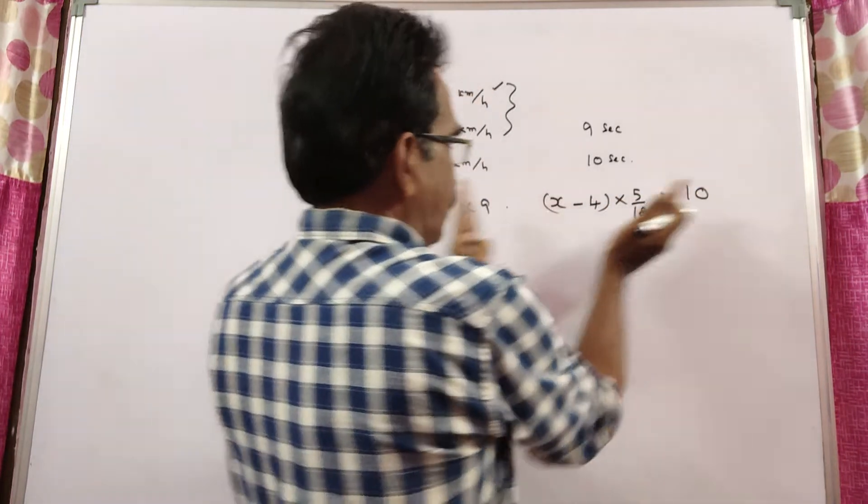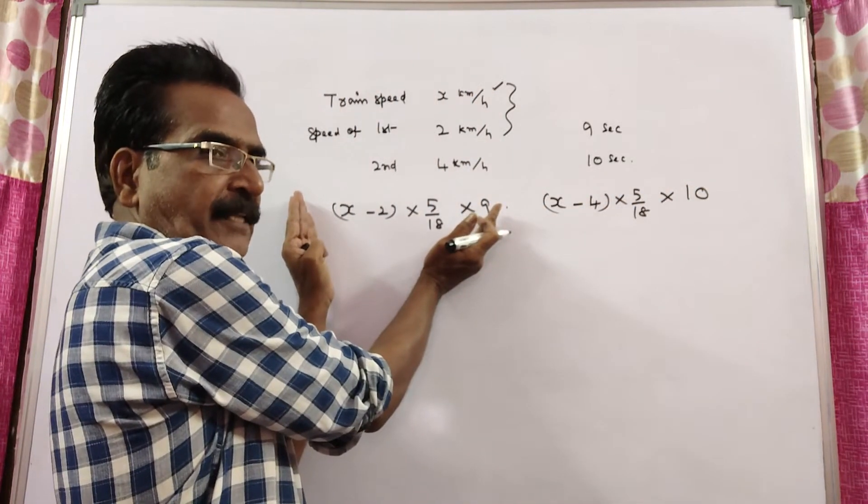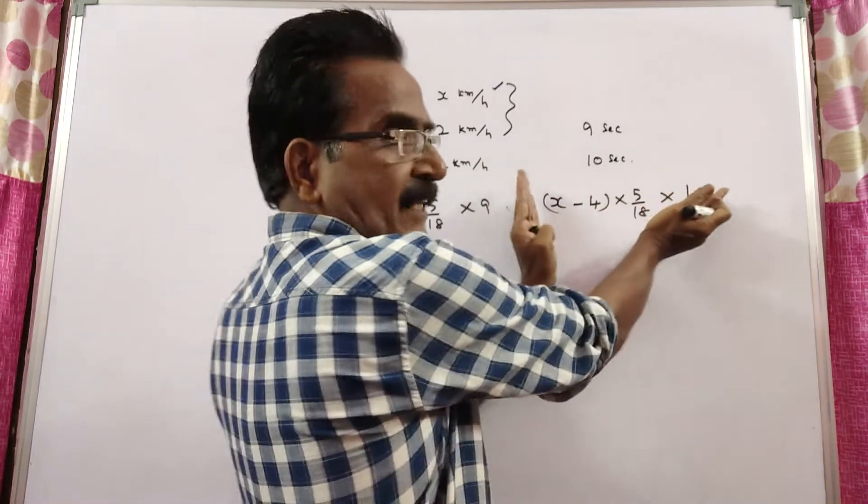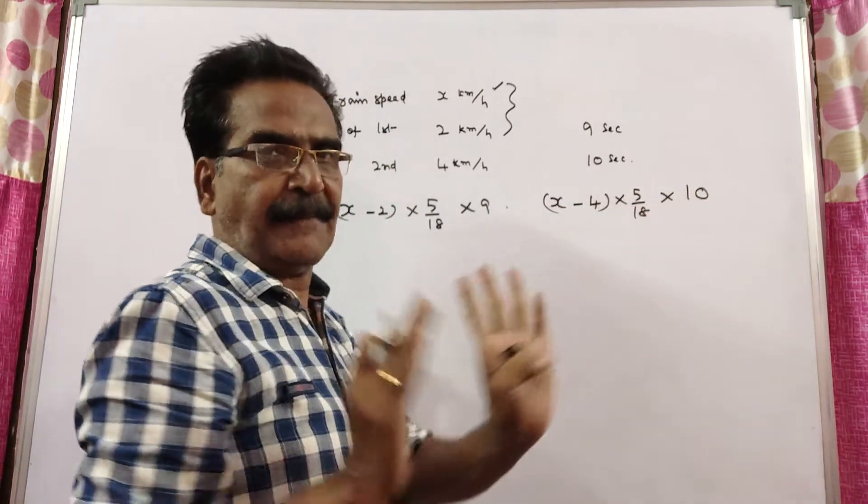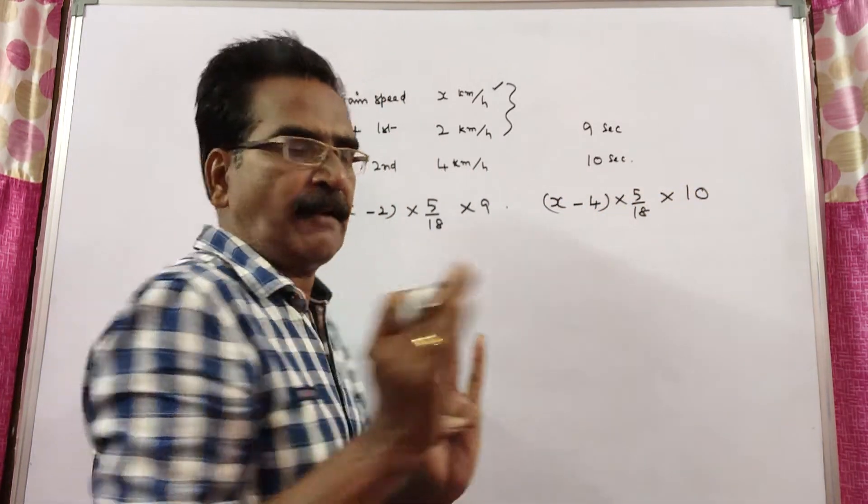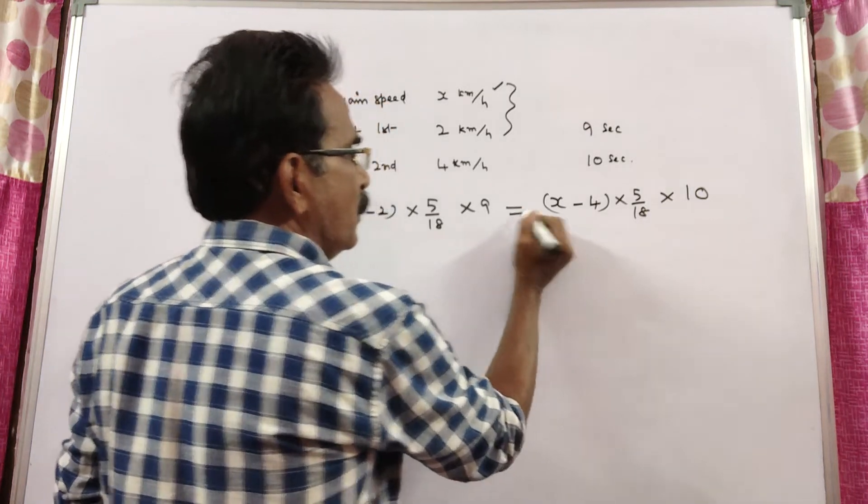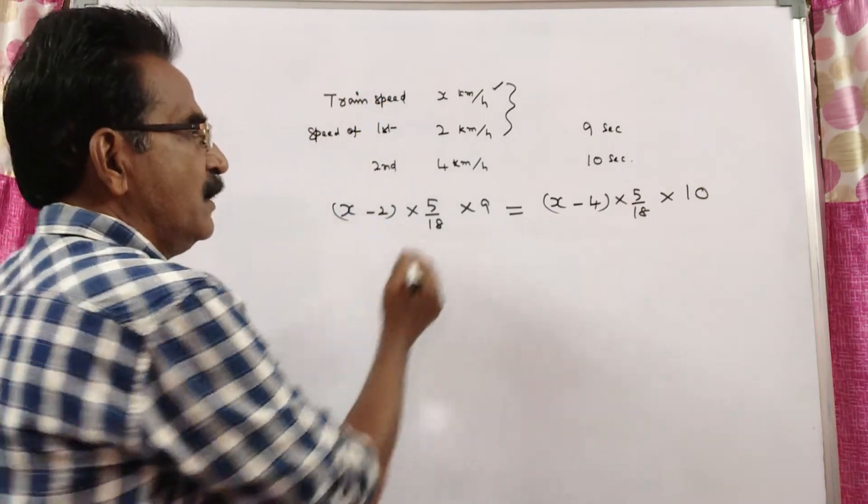This is also length of the train. This is the length of the train while crossing the first man. This is the length of the train while crossing the second man. Length of the trains are equal in both the cases. So, these two I am making equal.